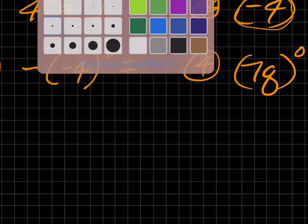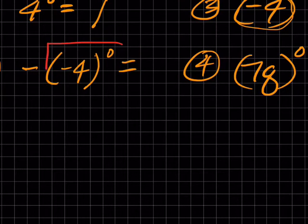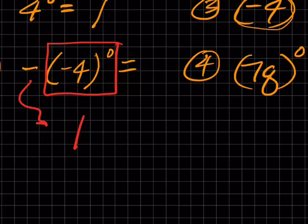This portion of it, let's box this. This portion of it equals one, but this negative sign is still there. So this is actually negative one. And then this guy is equal to one. All right, that's it.